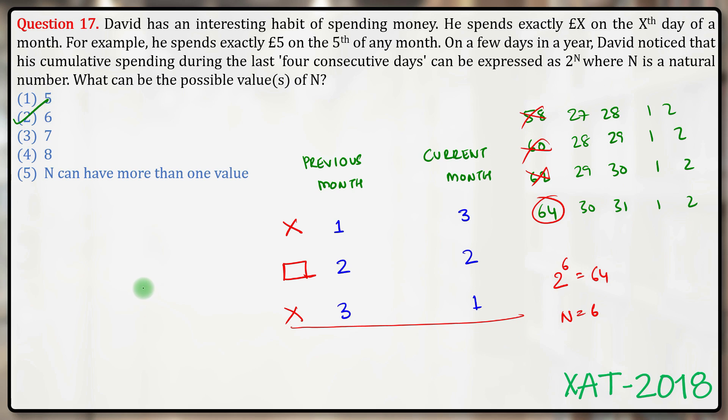Now coming to the second approach, how we could have avoided writing all these cases and still managed to get our answer. We knew that two dates were from the previous month, that means they would be in the range 29, 30. Therefore, their sum would be in the range 60, and as only one power of 2 is in the range 60,